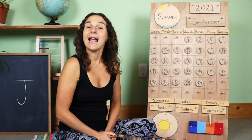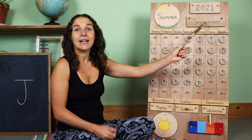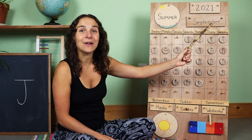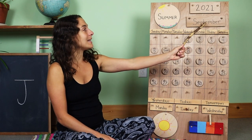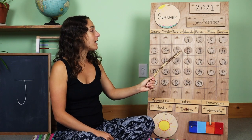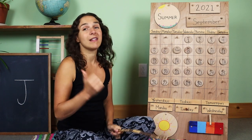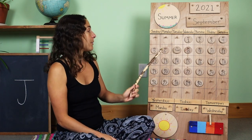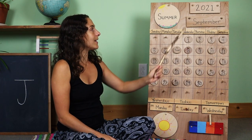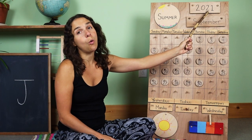I have my pointing stick and let's go over the date first. Here's the month. Do you remember what the month is? September. You're right. The month is September, and today is September 7th. Let's move the chip over from yesterday. Yesterday was September 6th and today is September 7th. The year is 2021.